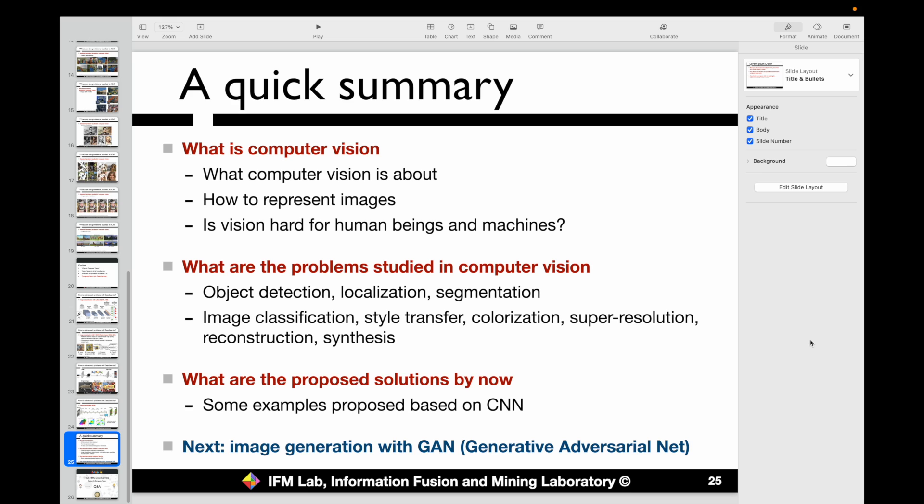At the end, we also mentioned how to use deep learning models to address many computer vision problems. We showed you examples like how to use the CNN model to classify images, and how to localize objects inside images with the region-based CNN model. We also mentioned style transfer with CNN and DCNN models as well as auto-encoder architecture.